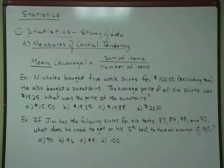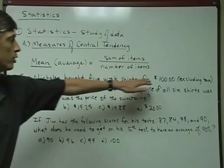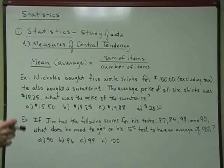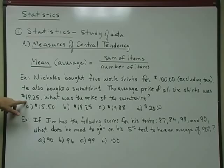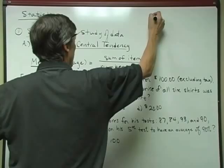First example: Nicholas bought five work shirts for $100, excluding tax. He also bought a sweatshirt. The average price for all six shirts was $19.25. What was the price of the sweatshirt? Well, the idea is that if we have five work shirts for $100, they're going at about $20 a shot here, $100 divided by five. But the price of all six shirts, the average price here is $19.25. So the sweatshirt was actually cheaper than $20. So we know right away it can't be answer D.